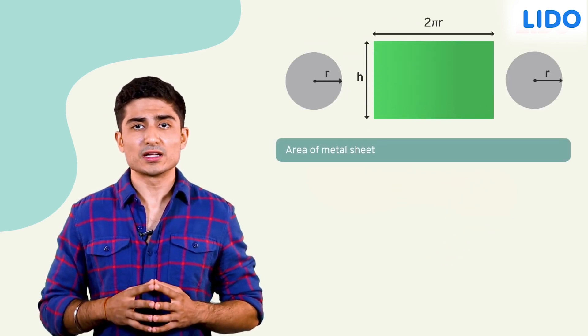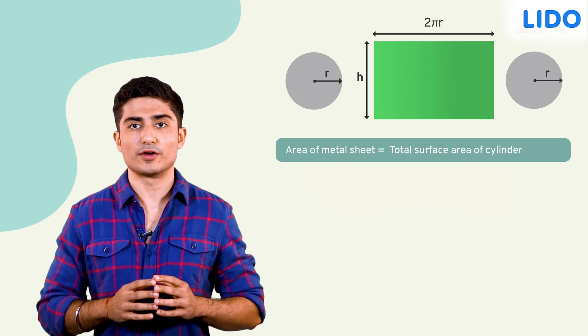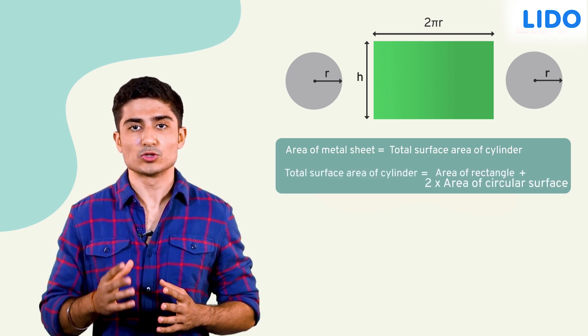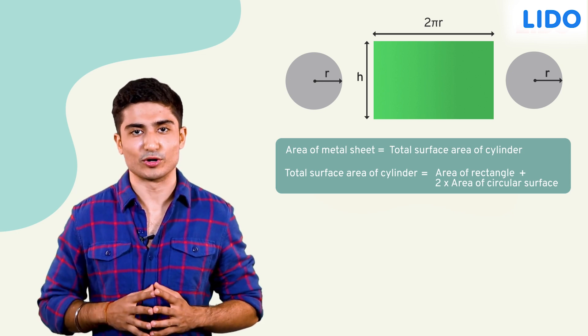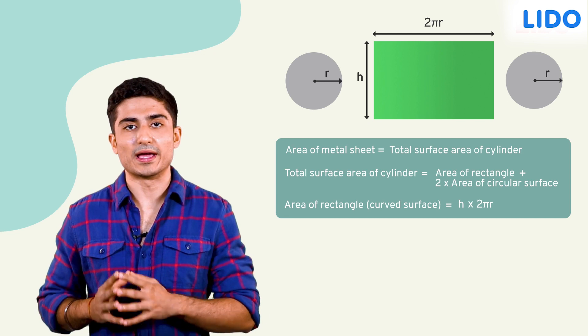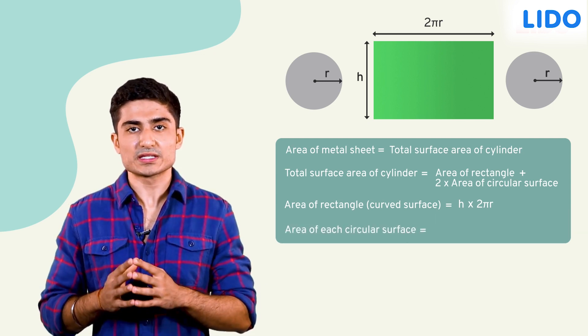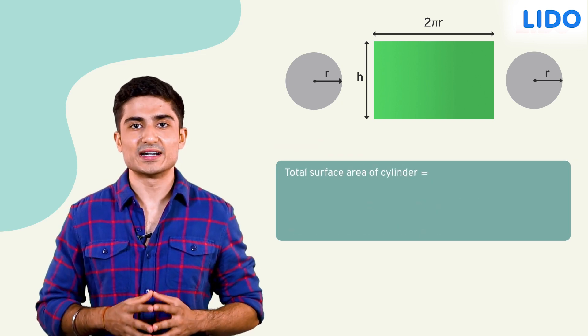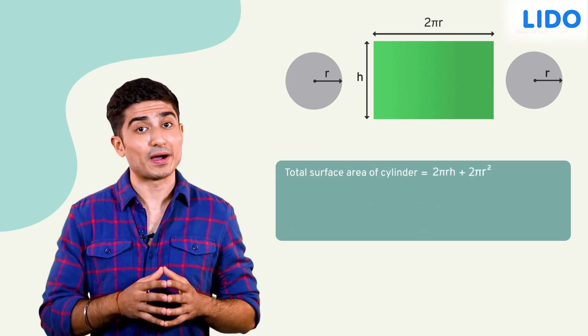The area of the metal sheet needed will be the total surface area of the can which is the sum of the areas of the flattened rectangle and the two circles at the top and the bottom. The area of the rectangle is h multiplied by 2πr. The area of each of the circular surfaces is πr². So, we have the total surface area of a cylinder as 2πrh plus 2πr².